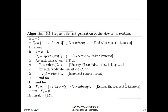Representing this algorithmically: initially K = 1, find all frequent one item sets. Then increase K; generate candidate item sets; for each transaction identify all candidates belonging to that transaction, then increment the support count. Extract the frequent K items for those meeting minimum support. Repeat until F(K) is empty (null). In this way we can generate frequent item sets using the Apriori algorithm. Thank you for listening.